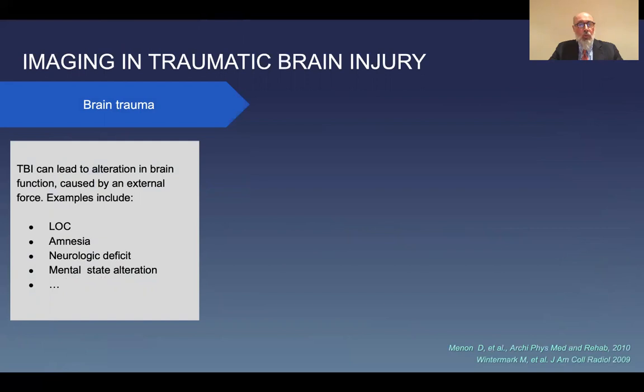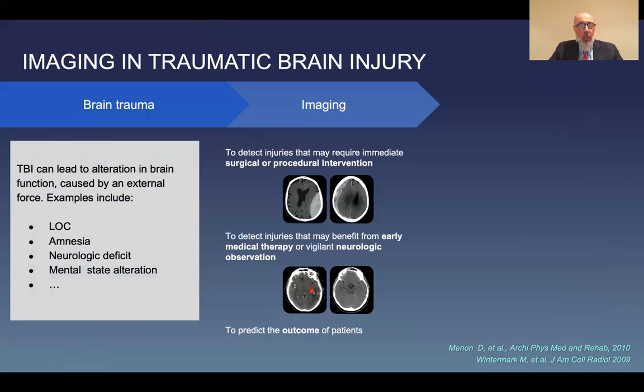As we all know, traumatic brain injury can lead to alteration in brain function caused by an external force. Examples include loss of consciousness, amnesia, neurologic deficit, and mental state alteration. What happens usually in a clinical setting is that imaging is performed, and imaging has three basic goals: one, to detect injuries that may require immediate surgical or procedural intervention; two, to detect injuries that may benefit from early medical therapy or vigilant neurologic observation; and three, importantly, to predict the outcome of patients.